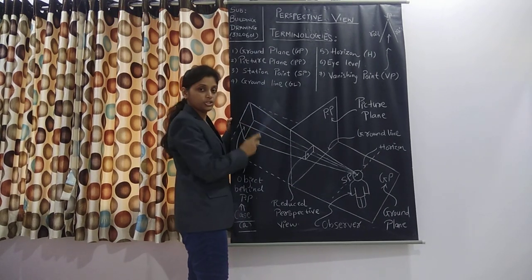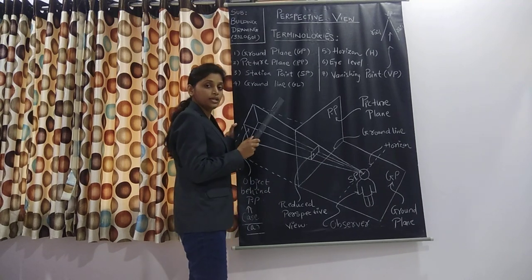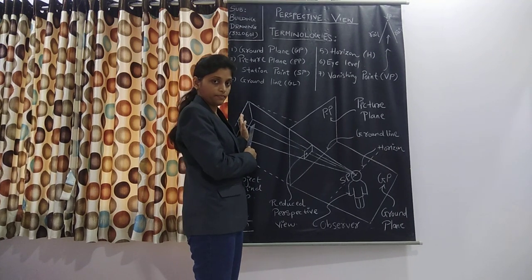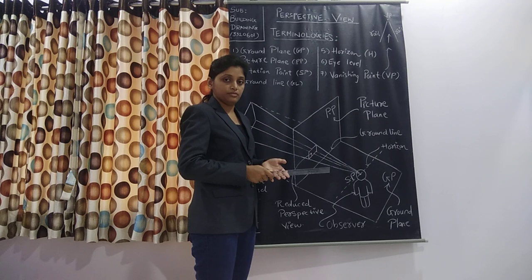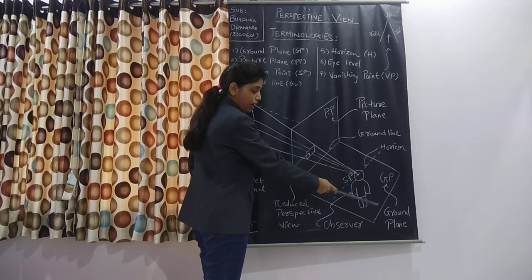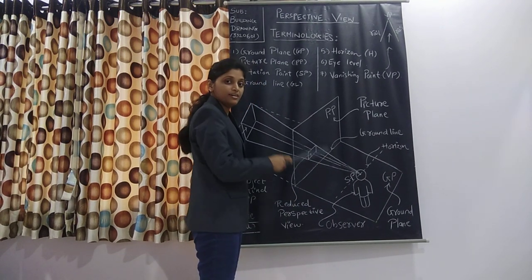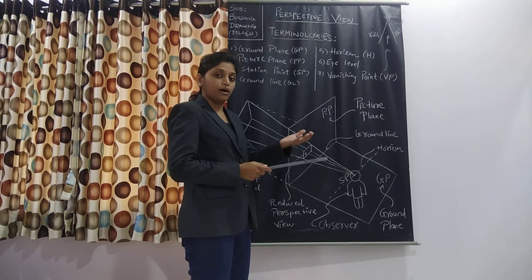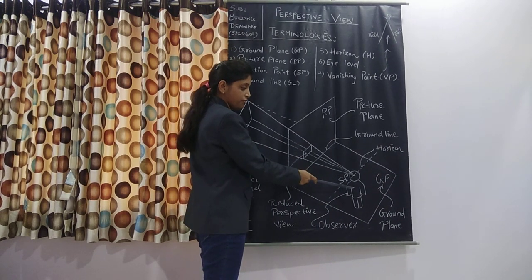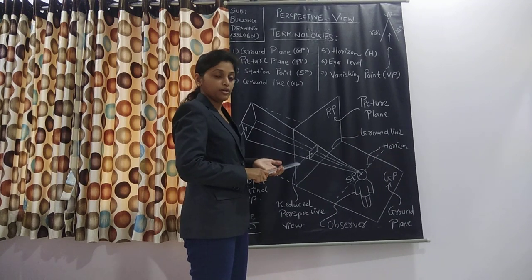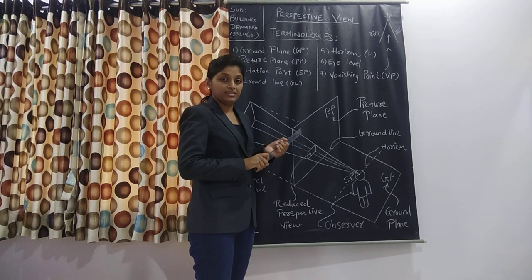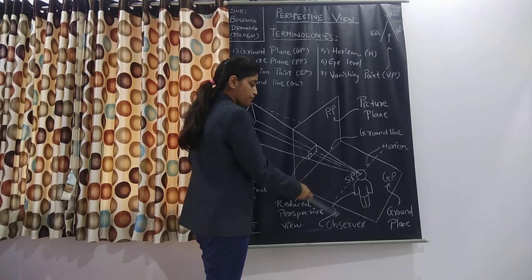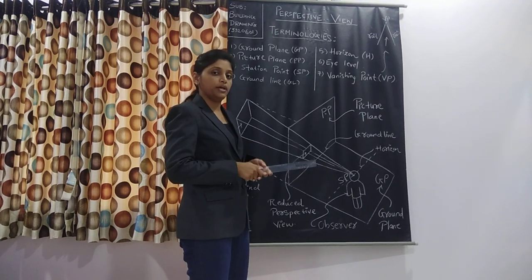The third definition is of station point, SP. It is the point from where the observer looks towards the object. If you are talking about a plan, that is the top view, the point on the ground plane where the observer is standing is termed as station point. If you are talking about elevation, then the eye of the observer is considered as station point, SP.